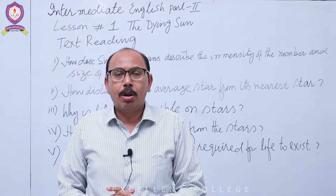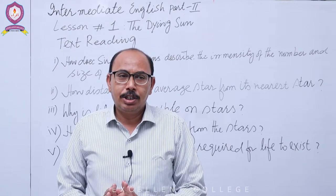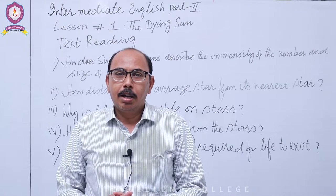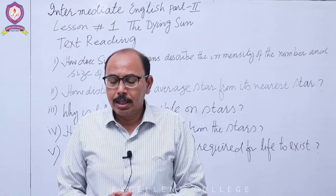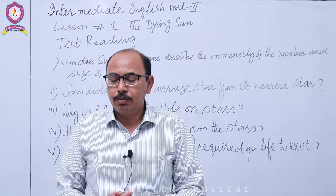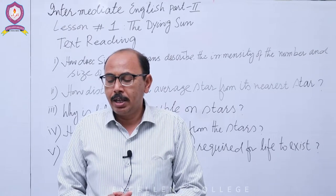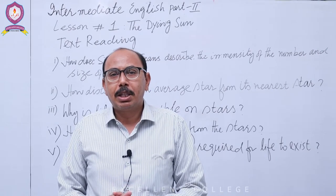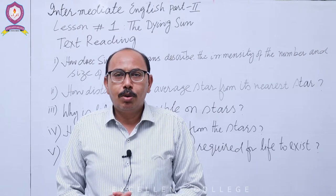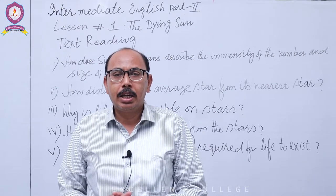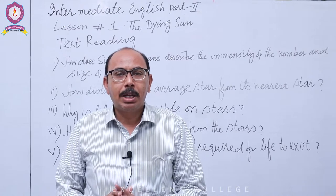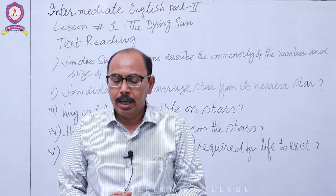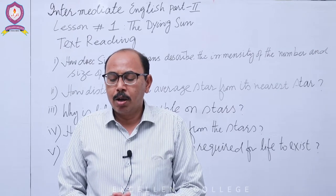لیکن زیادہ تر ستارے اتنے بڑے ہیں کہ 'hundreds of thousands of us could be packed inside each and leave room to spare' — یعنی لاکھوں زمینیں ایک ستارے کے اندر pack کر سکتے ہیں اور پھر بھی جگہ بچ جائے گی۔ اس phrase 'hundreds of thousands of us' کی طرف آپ کی توجہ دلانی ہے۔